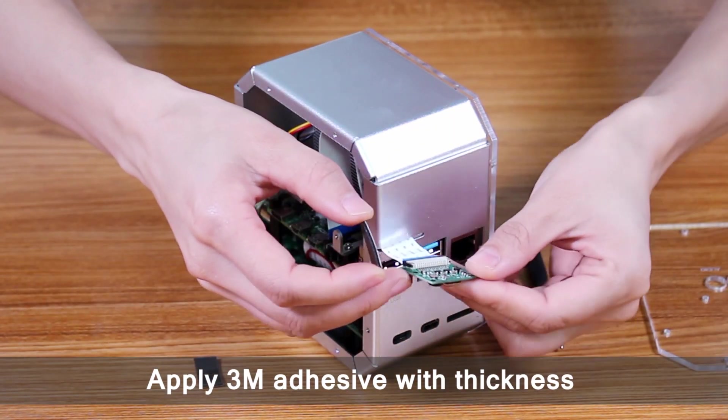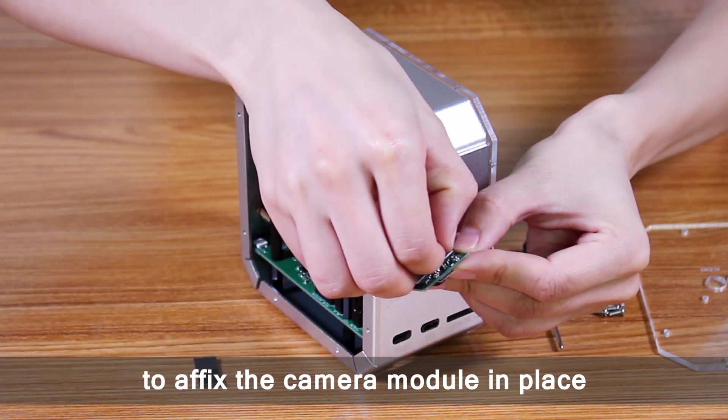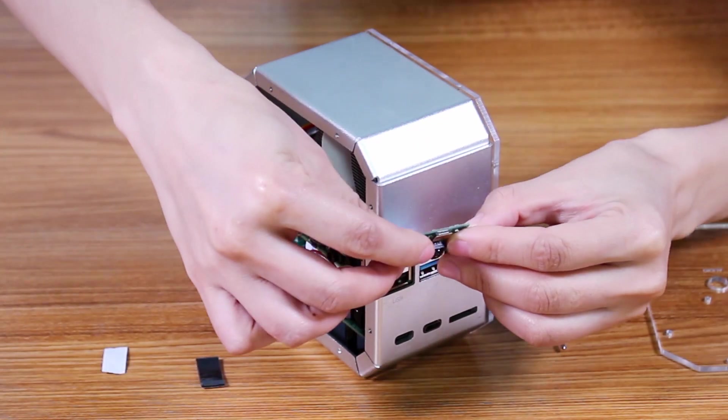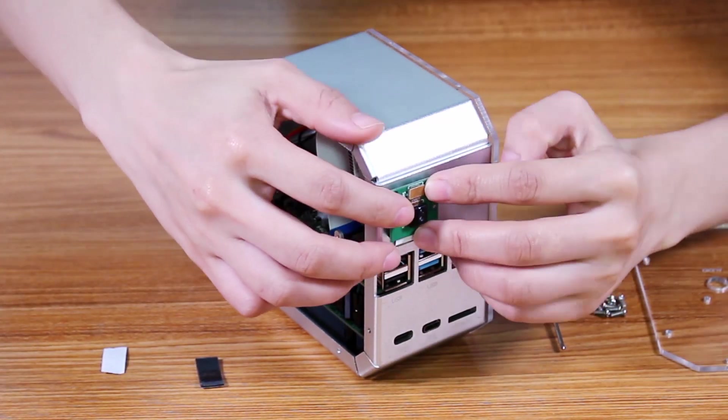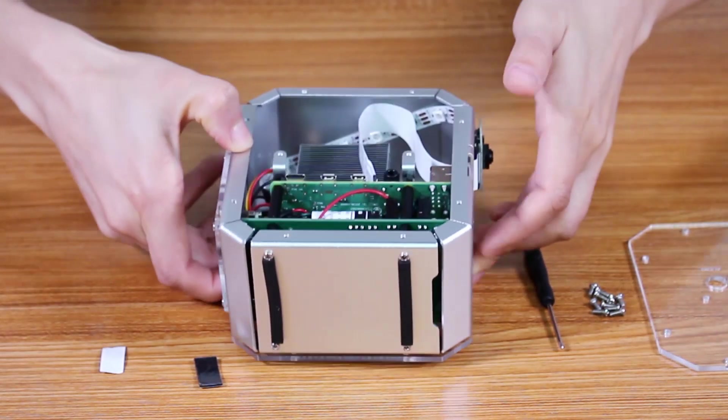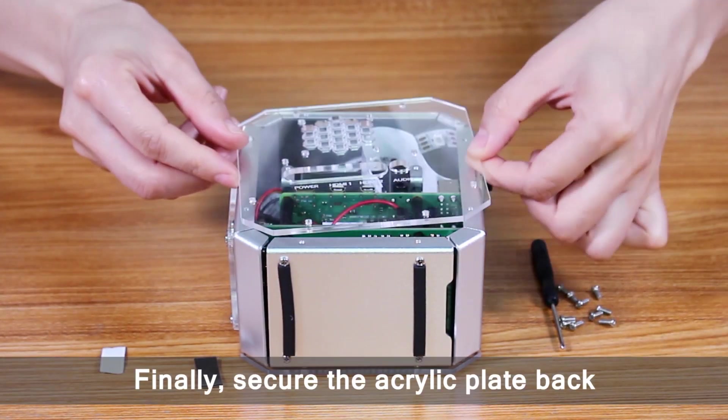Apply 3M adhesive with thickness to affix the camera module in place. Finally, secure the acrylic plate back.